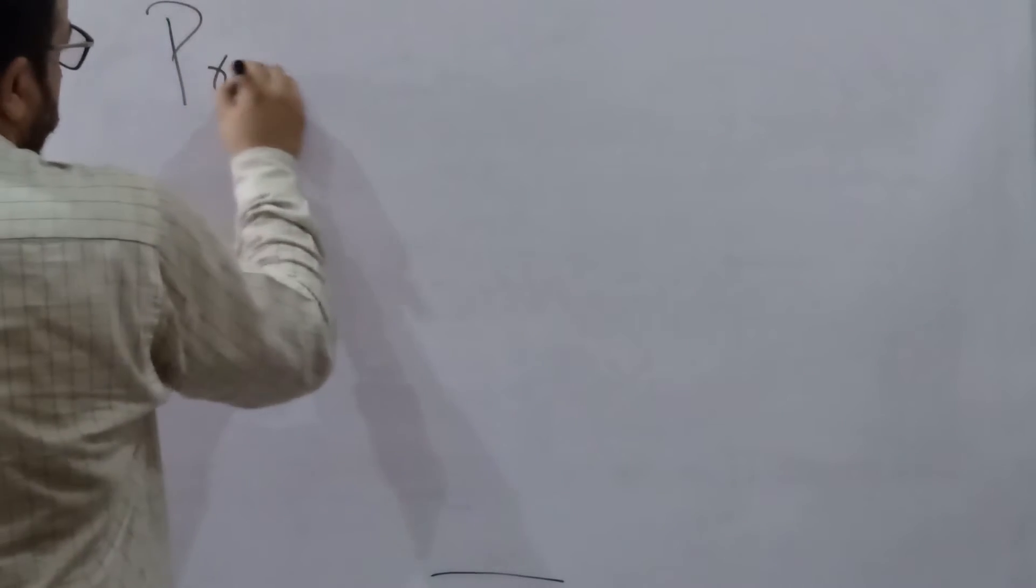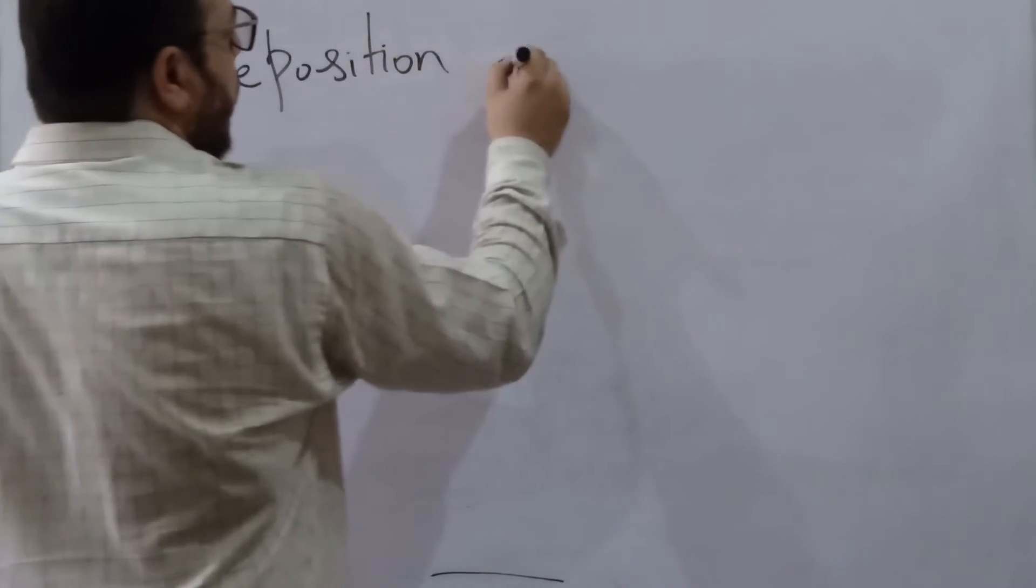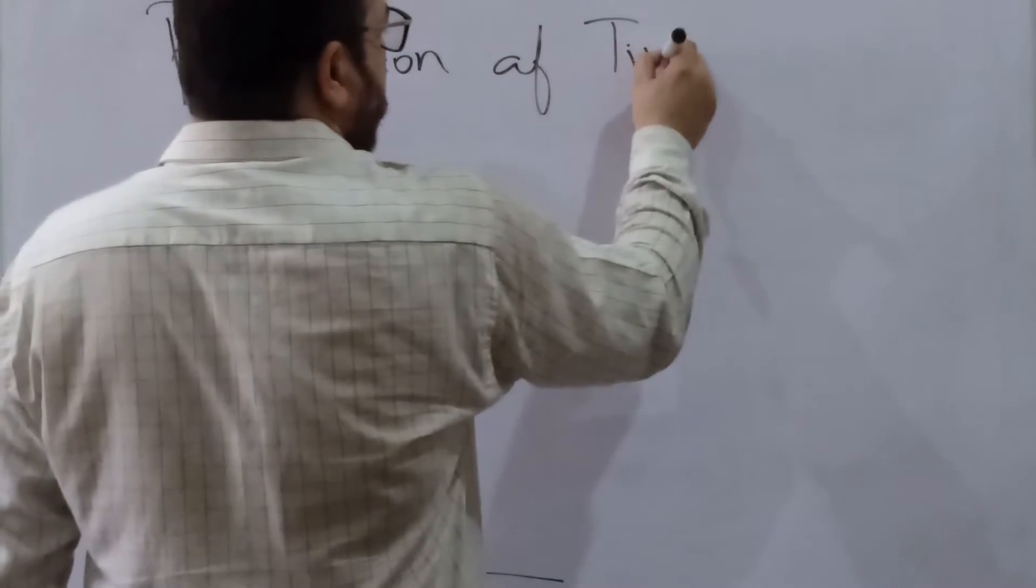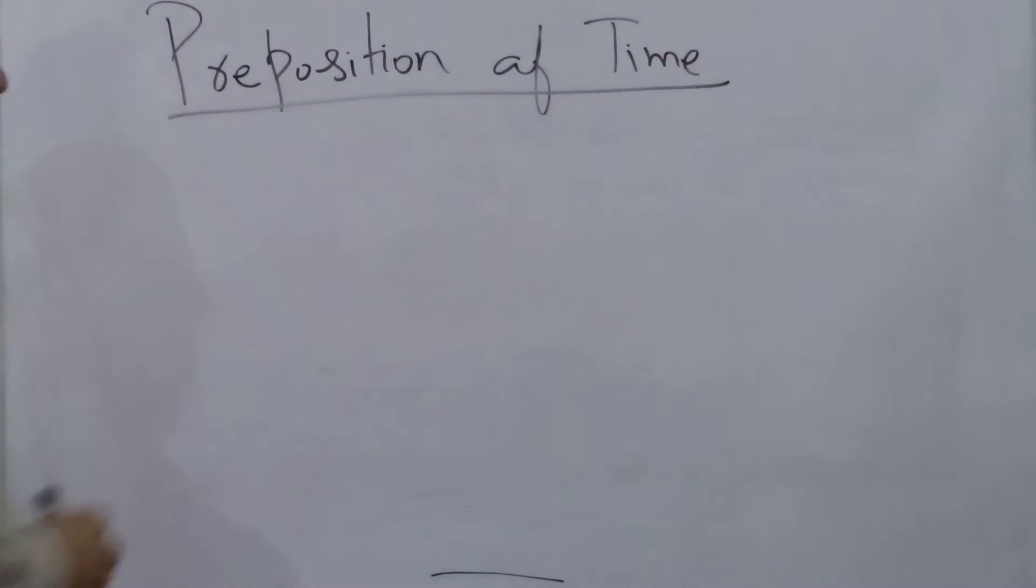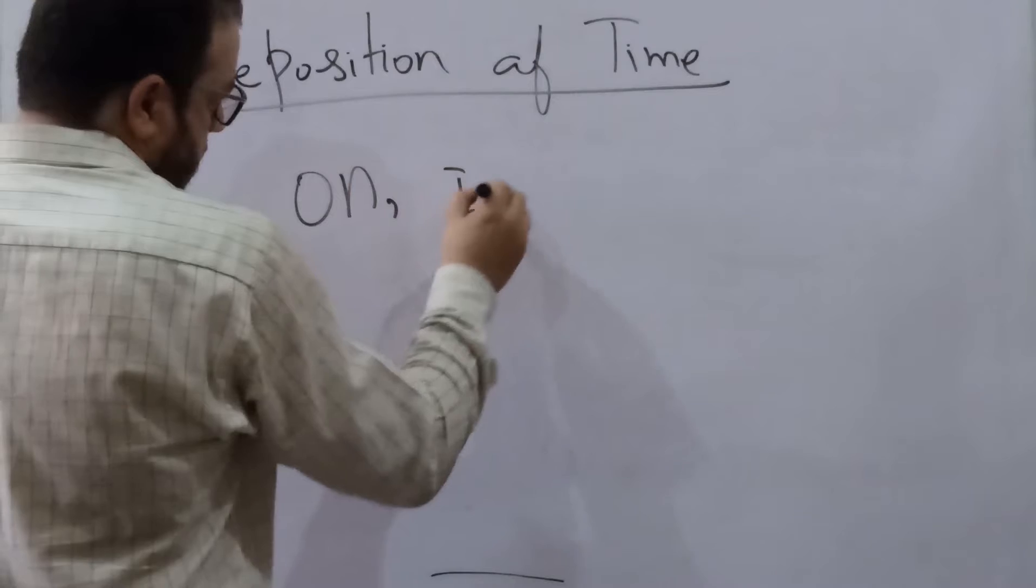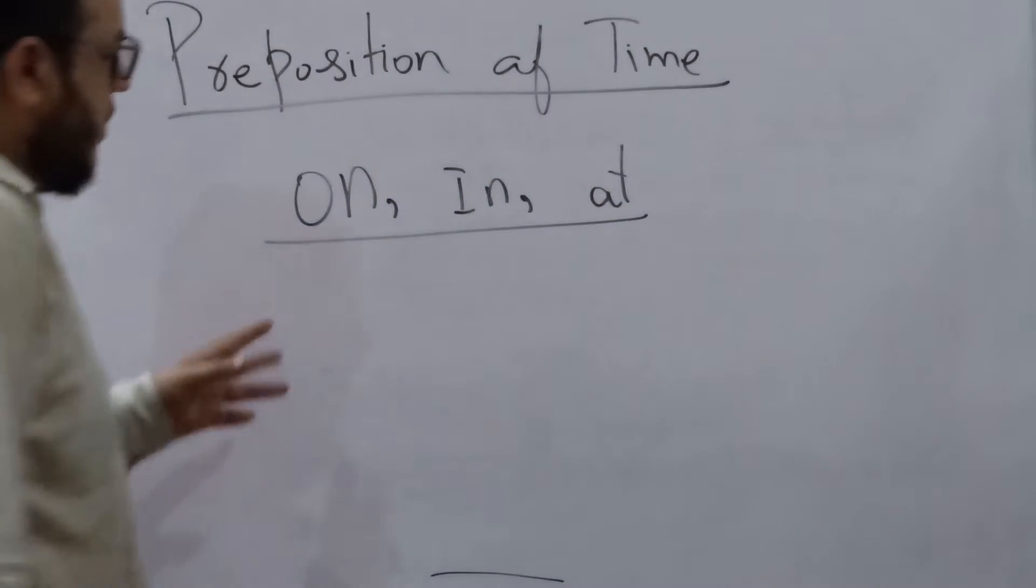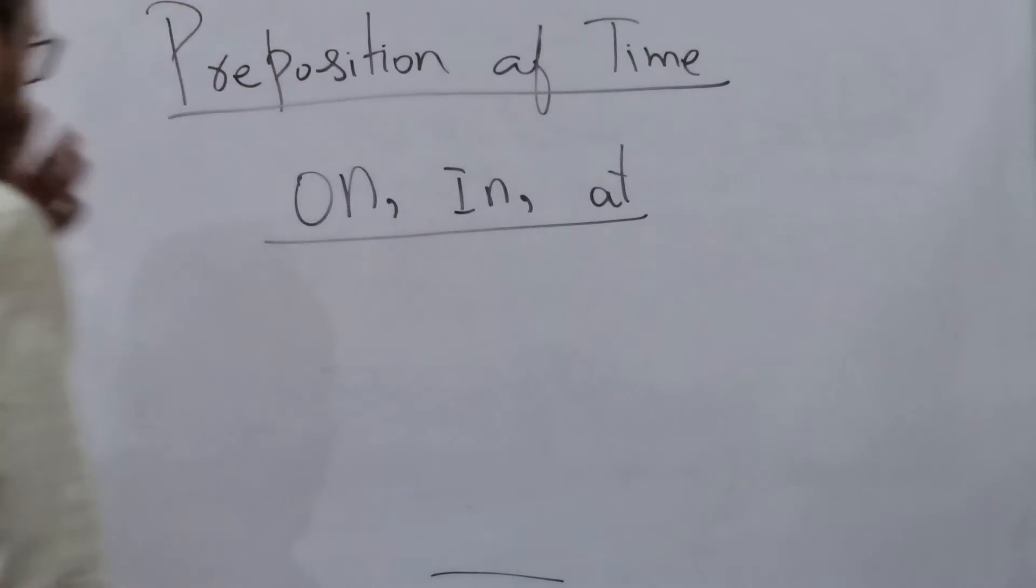Let's see the prepositions of time. There is a lot of confusion about where the prepositions should be. The prepositions are on, in, and at.